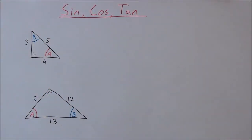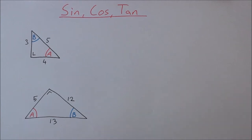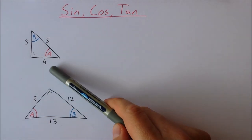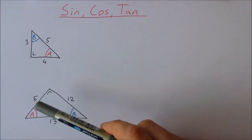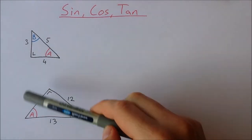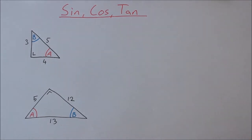In this video I'm going to take a look at actually calculating the sine, cosine and tangent of some unknown angles. I have two examples here — two right angle triangles with angles labelled A and B in each of them. I'm going to calculate the sine, cosine, and tan of each angle in these triangles.